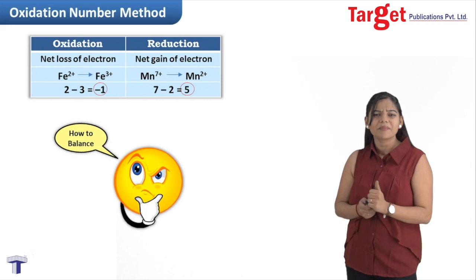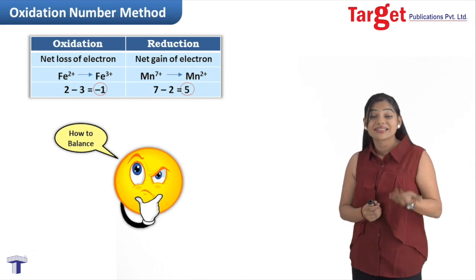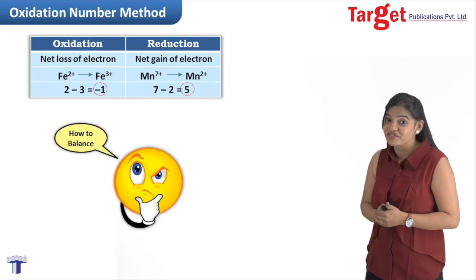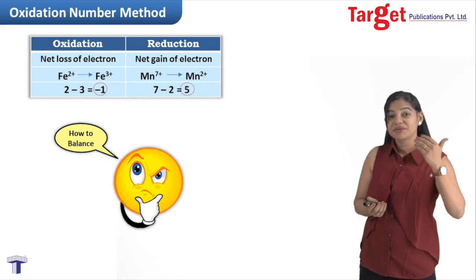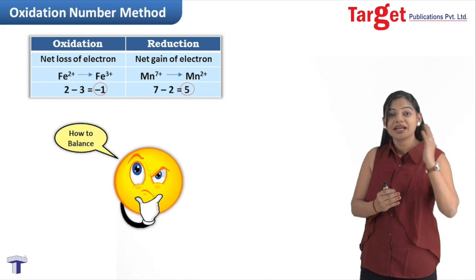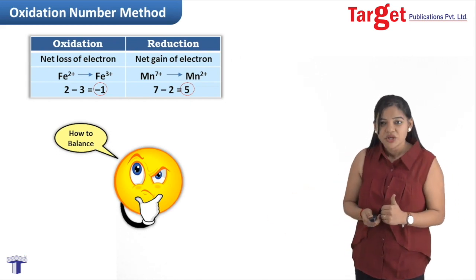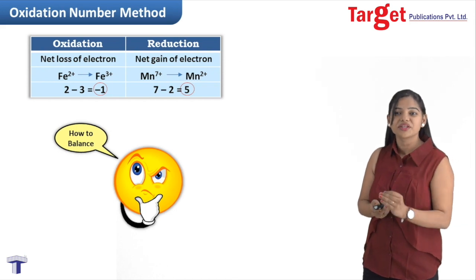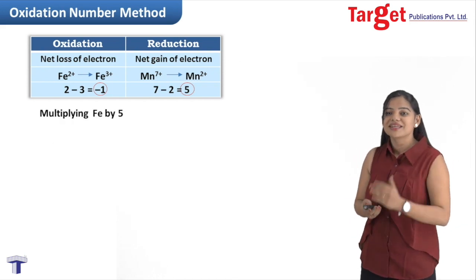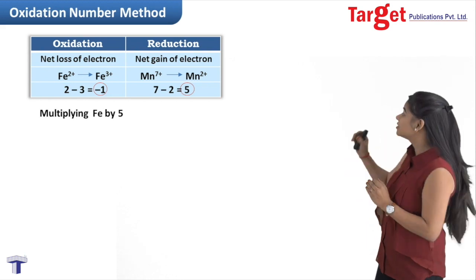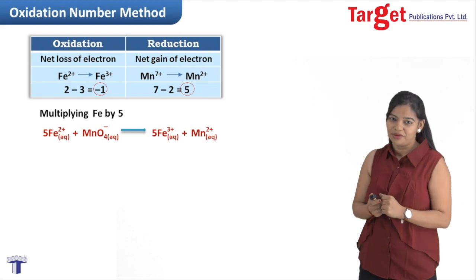Now, how do we balance this? The loss of electrons is 1 whereas the gain of electrons is 5. We need a common factor so that net loss equals net gain. So we multiply Fe by 5 on both the reactant and product sides, giving a common factor of 5 electrons.